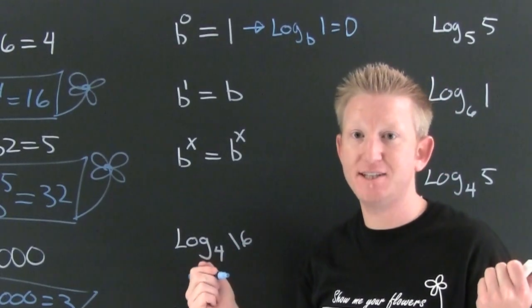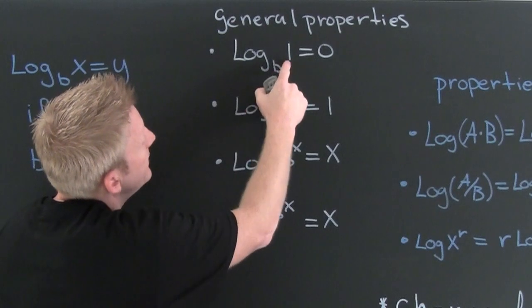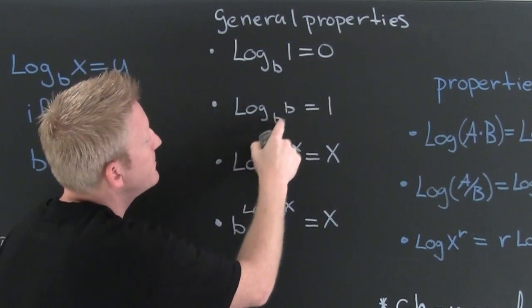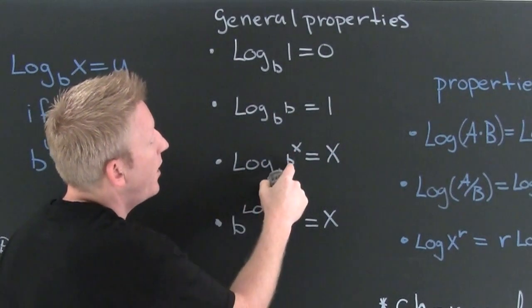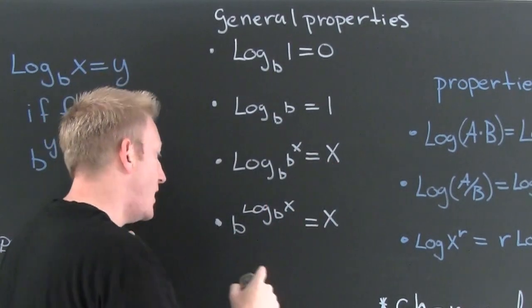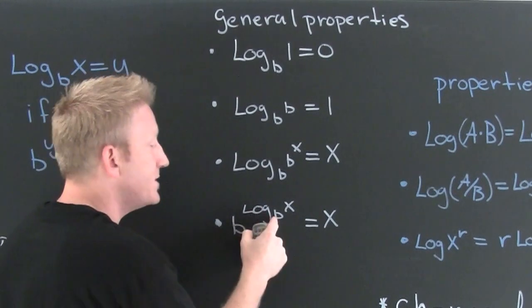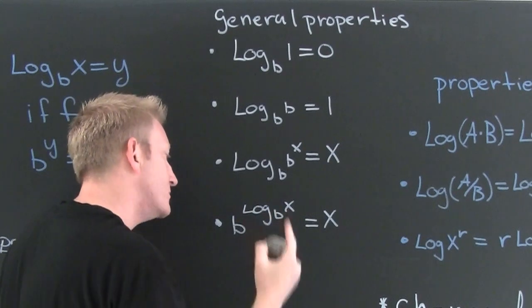Develop in some of those log properties. Some general properties of logarithms. Log base b of one is zero every single time. Log base b of b is one every single time. Log base b of b to the x is x every single time. Log base b, b to the log base b of x is x every single time.